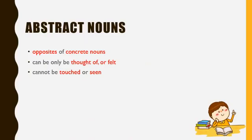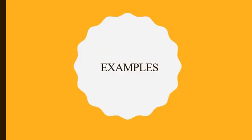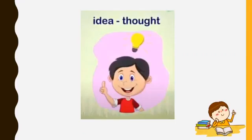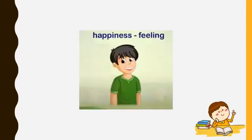Abstract nouns are actually the opposites of concrete nouns. They can be thought of or felt, but they cannot be touched or seen. For example, in projects you get a lot of ideas — that idea is a thought. Happiness is a feeling. So idea and happiness are abstract nouns.